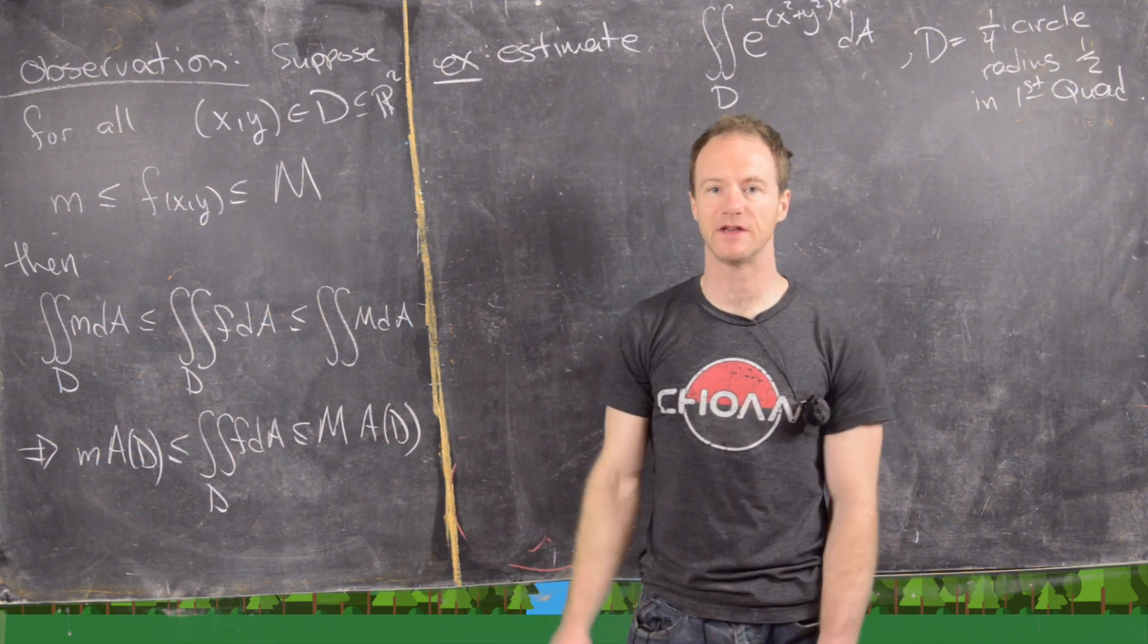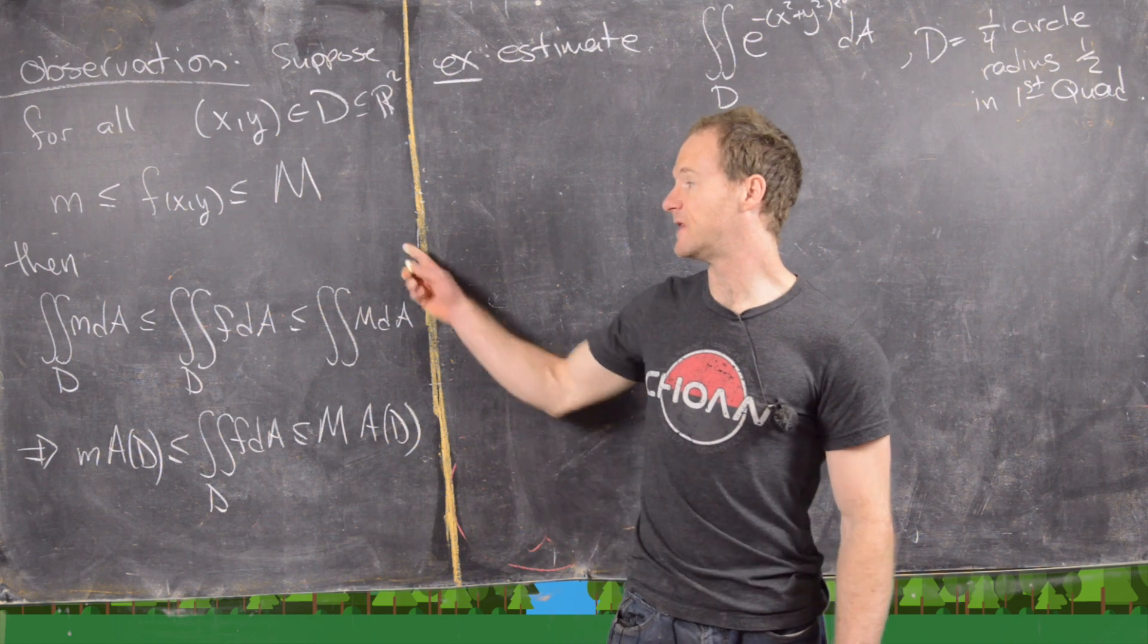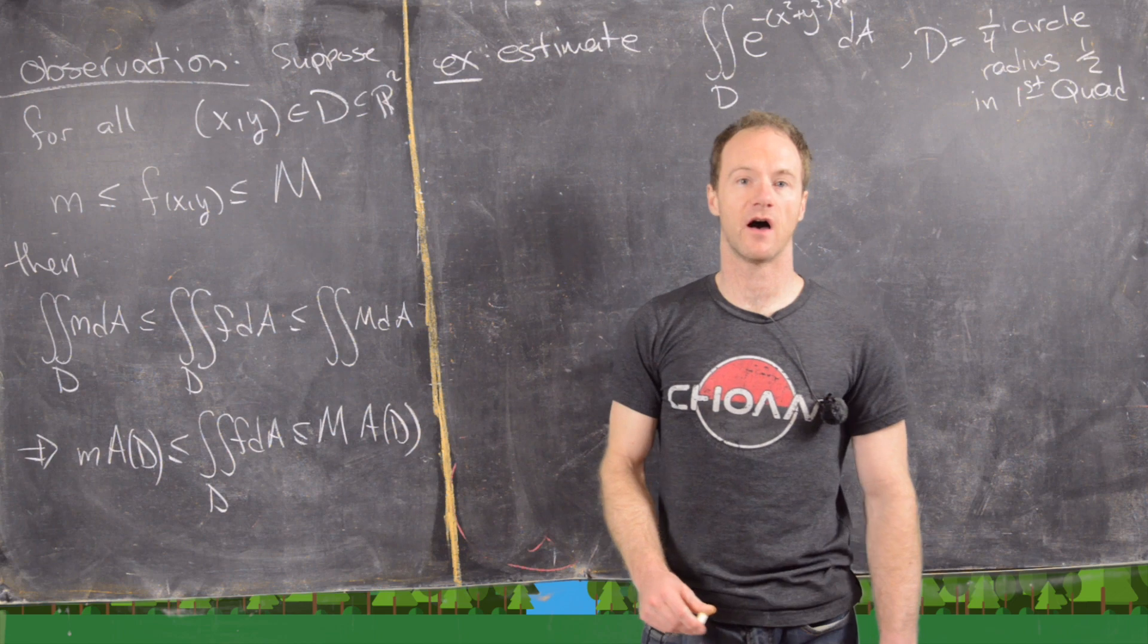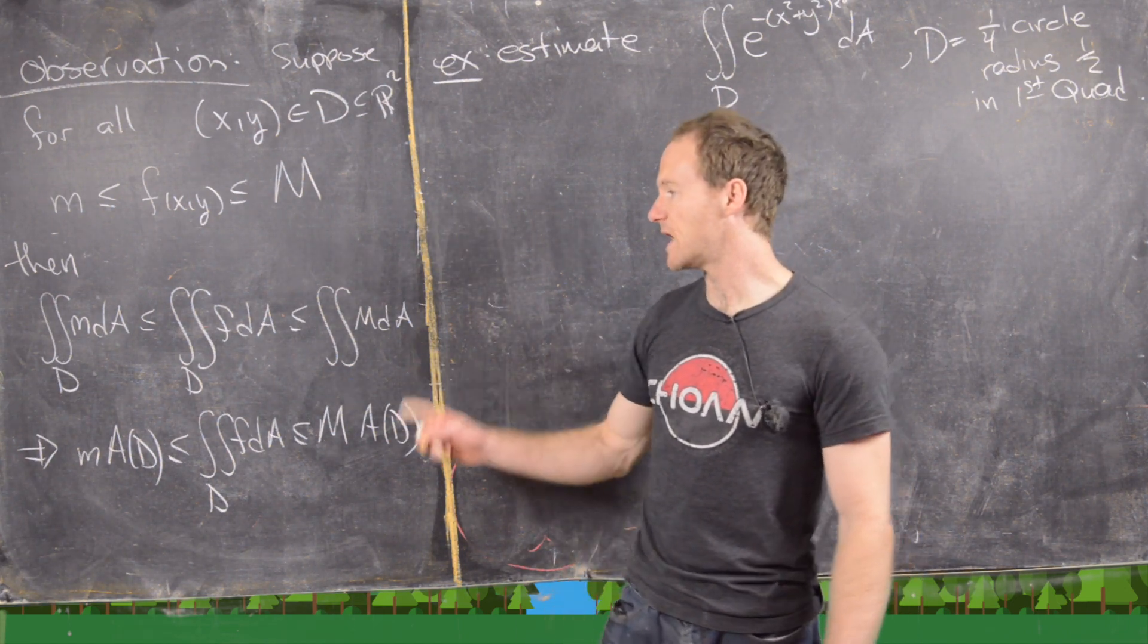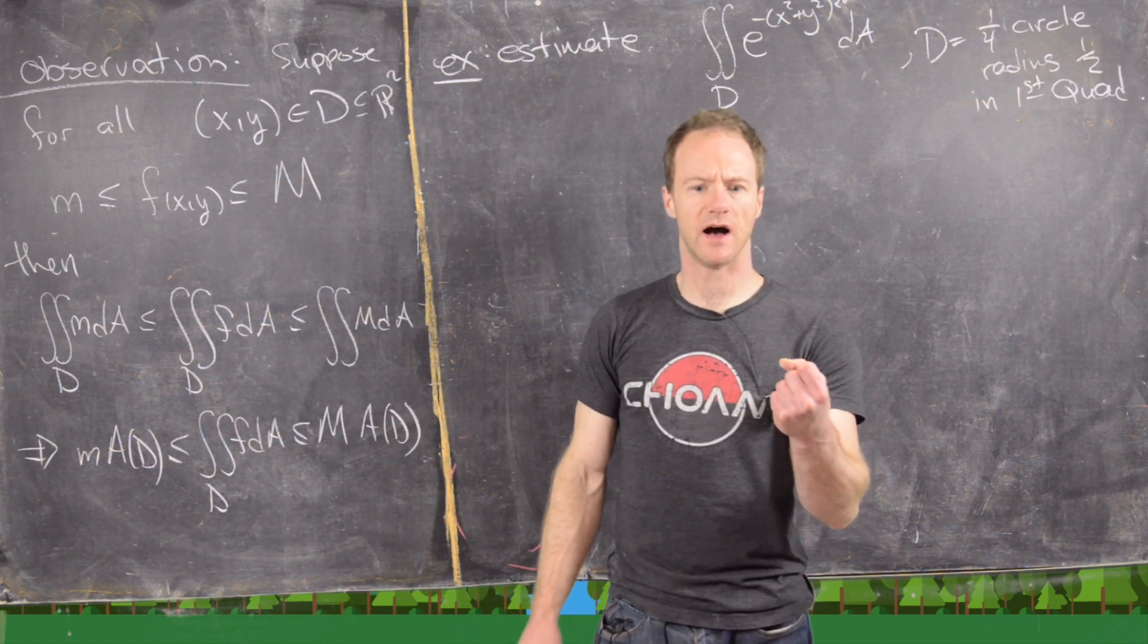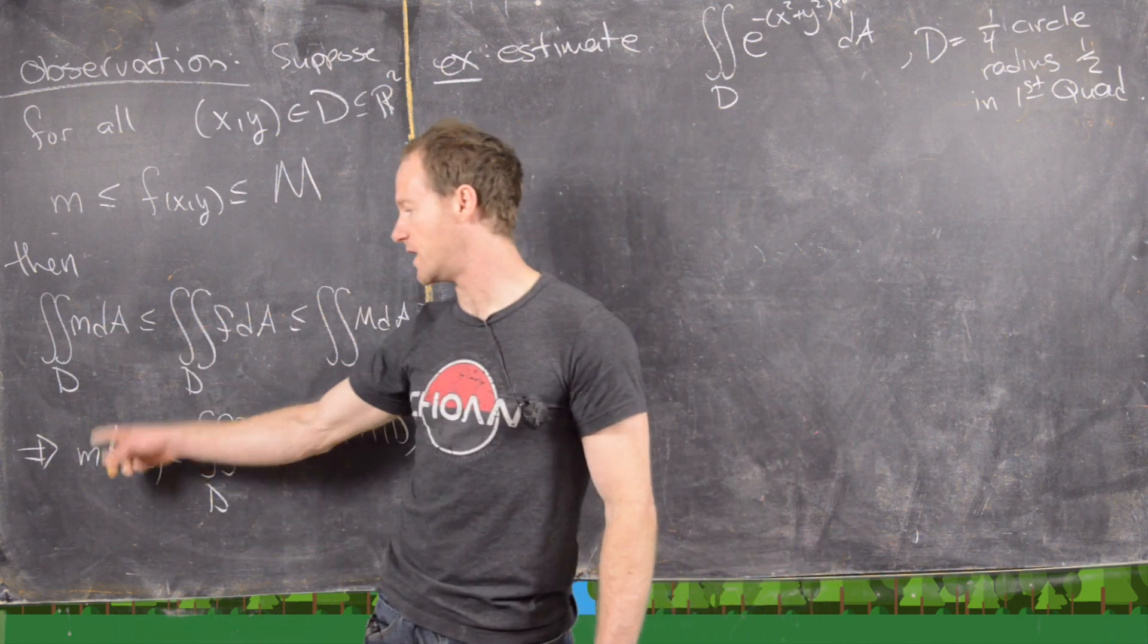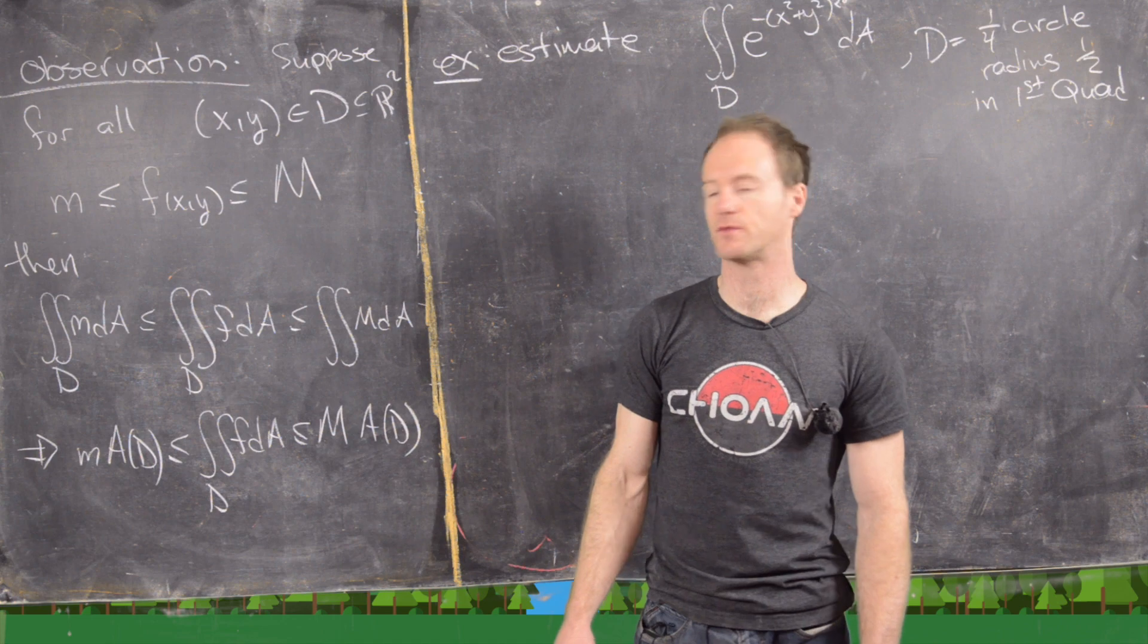Then we have the following. So if we take the double integral of all parts of this inequality, we still have an inequality. But the double integral of this minimum, that's just m times the double integral of 1. But the double integral of 1 gives you the area of the region. So we have m times the area of the region.